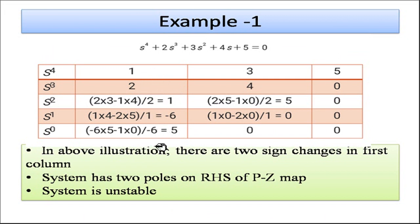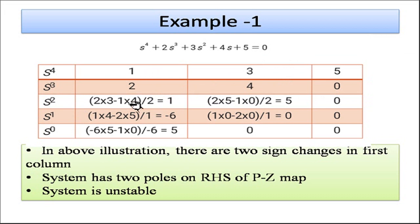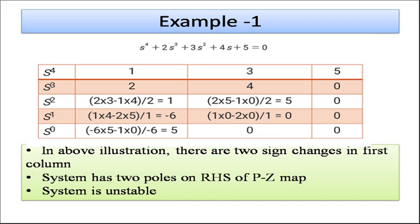As an example, consider the equation s^4 + 2s^3 + 3s^2 + 4s + 5 = 0. Writing the coefficients: s^4 is 1, s^3 is 2, s^2 is 3, s is 4, and the constant is 5. After cross multiplication — for instance, (2×3 − 1×4)/2 = 1 — all table values are computed. There are two sign changes in the first column, indicating two poles on the right-hand side of the s-plane, so the system is unstable.